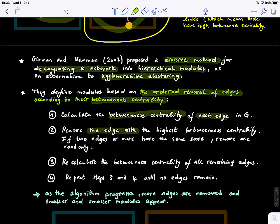Then in the second step, we remove the edge with highest betweenness centrality. Now, if you have multiple edges having exactly the same centrality, you randomly select one and remove it. Then recalculate the betweenness centrality of the remaining edges. Now you have changed your graph, you removed some edges, so you need to recalculate again.